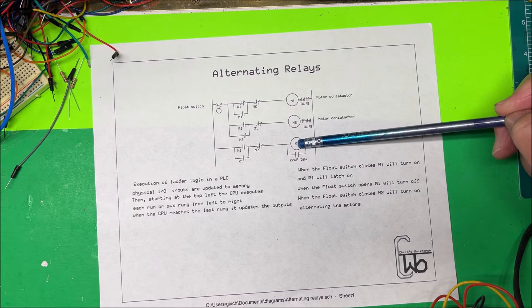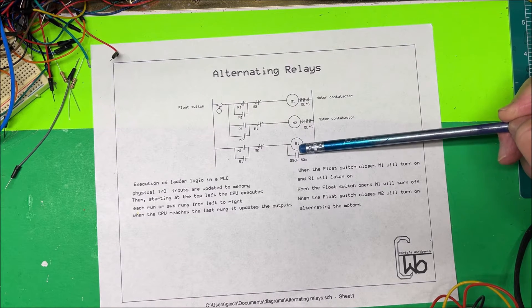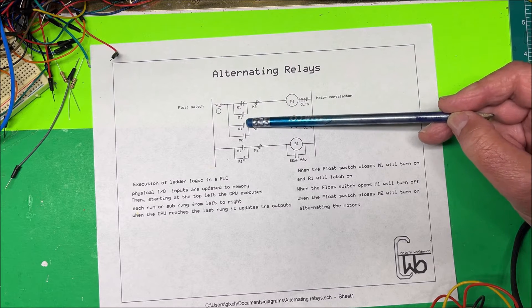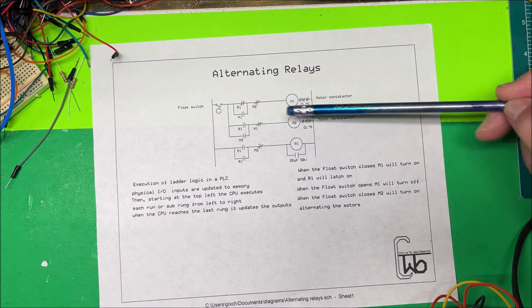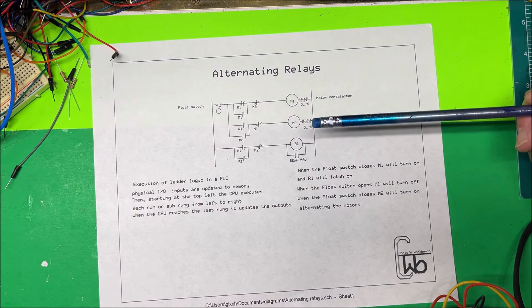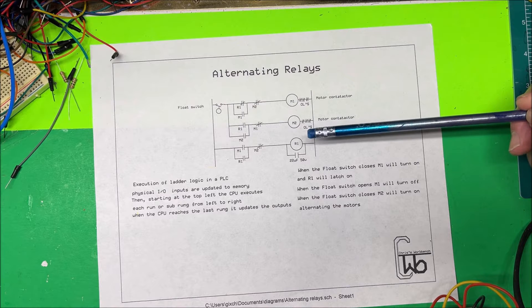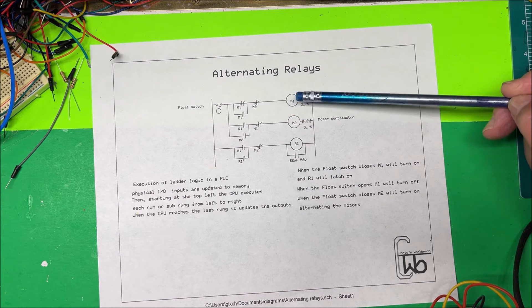That's what the capacitor does - it allows it to make before this thing breaks here. Most of the time we won't do relay logic like this, but we'll do it with ladder logic and a PLC. In a PLC, these physical inputs like this one are updating into memory.